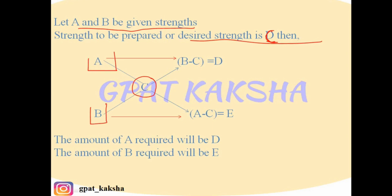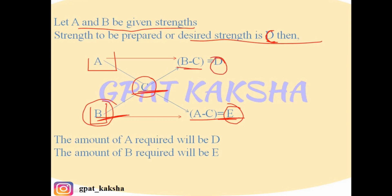We subtract C from A, so A minus C gives us E, and this value E is placed in front of B. So the amount of B required will be E parts. Likewise, we subtract C from B and obtain D, which is placed in front of A. So the amount of A required to produce C% alcohol is D parts. The amount of A required is D and the amount of B required is E.